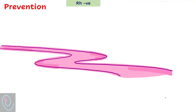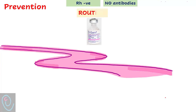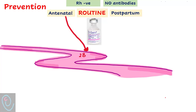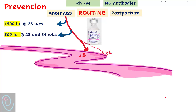In RH negative unsensitized women, sensitization is prevented by administration of anti-D immunoglobulin (Anti-D Ig). It is administered routinely during pregnancy and postpartum. During routine antenatal prevention, Anti-D is given as a single dose of 1500 international units at 28 weeks, or as two doses of 500 international units at 28 and 34 weeks.